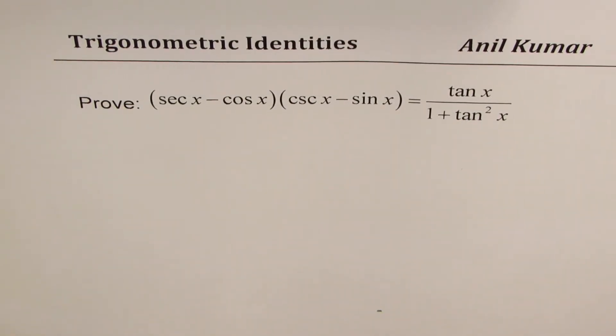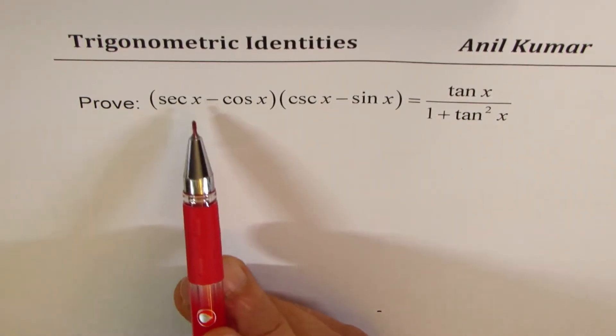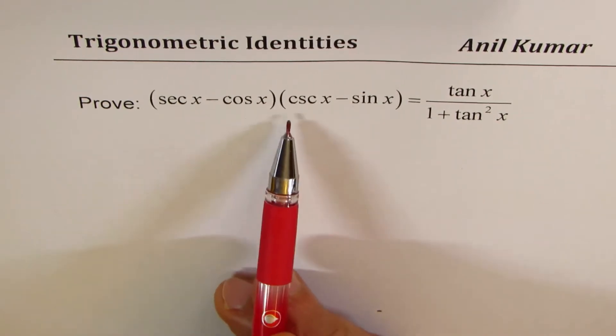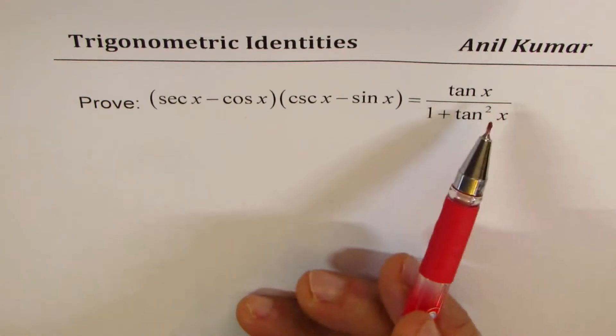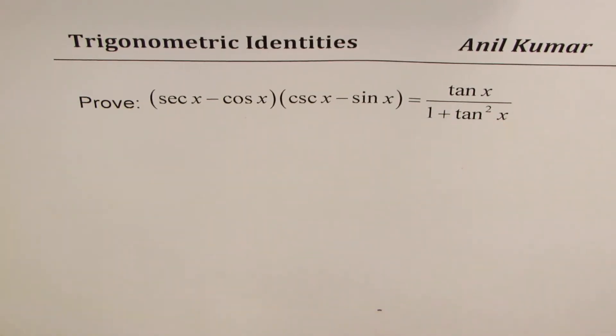I'm Anil Kumar. We'll prove the trigonometric identity (sec x - cos x)(csc x - sin x) = tan x / (1 + tan²x).